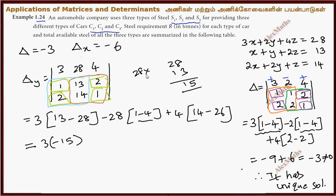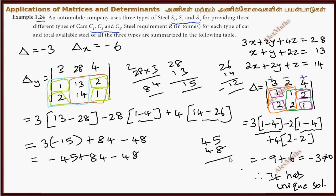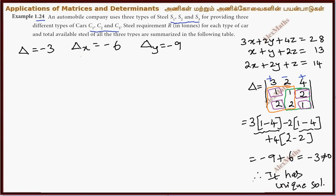Further simplification: 3 into 28, 13 subtract, 15, minus 15. That is minus 3. So 28 into 3: 84, plus 84. 2, 6, 14, 12, but minus 12. So minus 48. This total is minus 45 plus 84 minus 48. So 45 and 48 add 93, that is 84 subtract, minus 9. So delta y is minus 9.